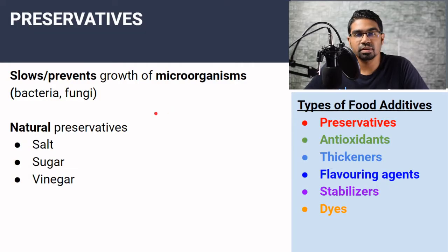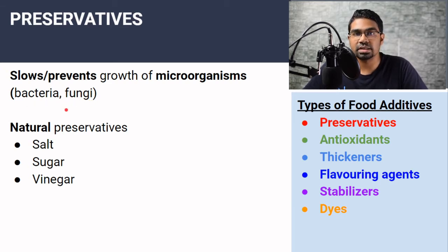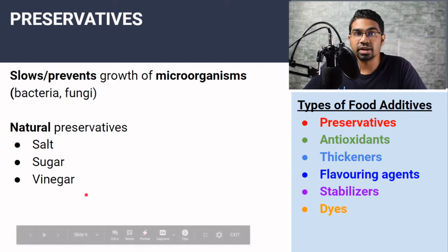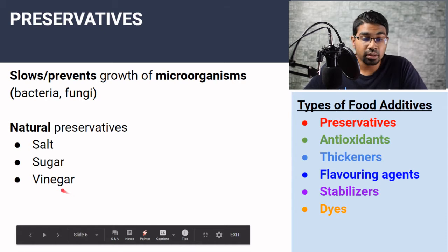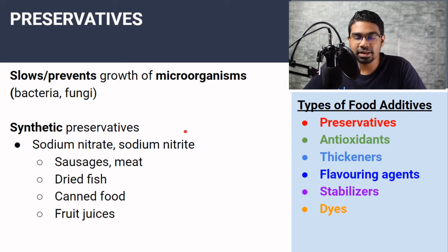Let's look at preservatives. The function of preservatives is to slow or prevent the growth of microorganisms such as bacteria and fungi, which are responsible for food spoilage. As long as we can stunt the growth or kill the microorganism present in the food, we can prevent food spoilage. Some natural preservatives are salt, sugar, and vinegar, used in many types of food processing such as pickling. High salt and sugar content will also prevent growth of microorganisms.